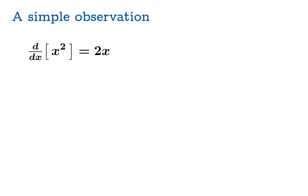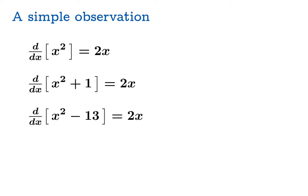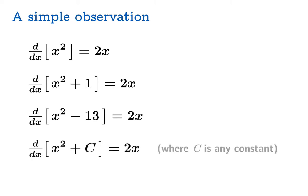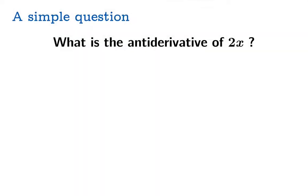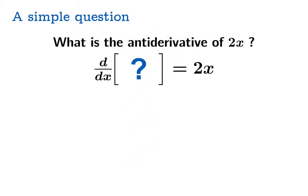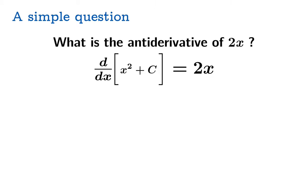We'll start with a simple observation. The derivative of x squared is 2x. The derivative of x squared plus 1 is 2x. The derivative of x squared minus 13 is 2x. And indeed, the derivative of x squared plus c, where c is any constant, is 2x. Now let's take this simple observation and turn it into a simple question: What is the antiderivative of 2x? In other words, what function would we take the derivative of to get 2x? Well, we've seen x squared works. So does x squared plus 1, x squared minus 13. Indeed, x squared plus c, where c is any constant.